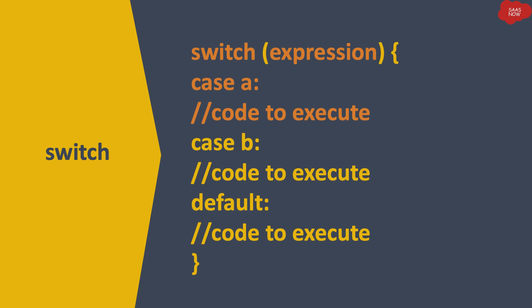For example, if case A gets the matching value, it will run the code written in case A. If you put break, it will not go to other cases. It will keep checking all expected values — case A, case B, and so on. If nothing matches from the expression, you would use default. Default runs whatever code you want to execute when neither case A nor case B is found.